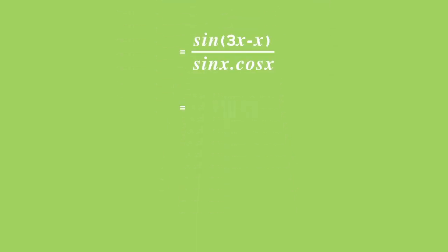Simplifying the brackets, we get sin 2x over sin x times cos x. Sin 2x in the numerator of the fraction can be expanded using double angles to give 2 sin x cos x, and this is still over sin x times cos x.